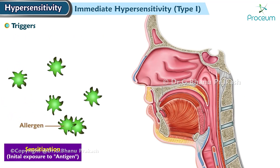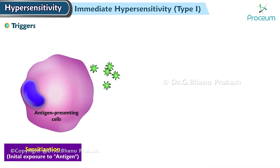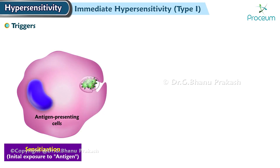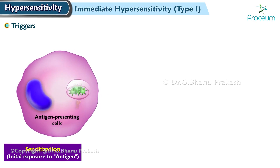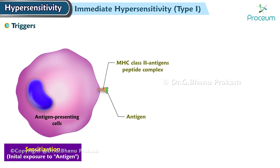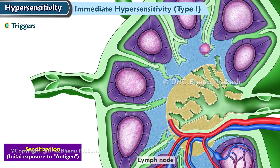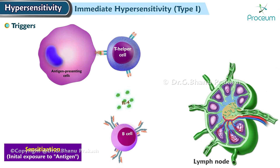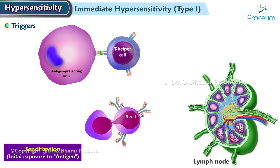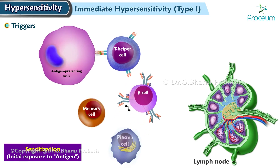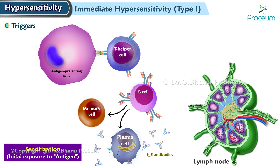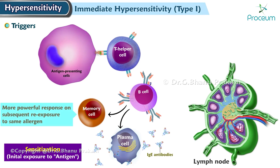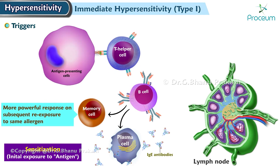When a person with an allergic tendency is first exposed to a particular allergen, antigens are taken up by antigen-presenting cells which process them and display them as peptide MHC2 complex on their surface. These antigen-presenting cells migrate to the lymph node. Compatible helper T cells secrete IL-4, a cytokine that prods compatible B cells to synthesize immunoglobulin E antibodies specific for the allergen. During this initial sensitization period, no symptoms are evoked, but memory cells form that are primed for a more powerful response on subsequent re-exposure to the same allergen.